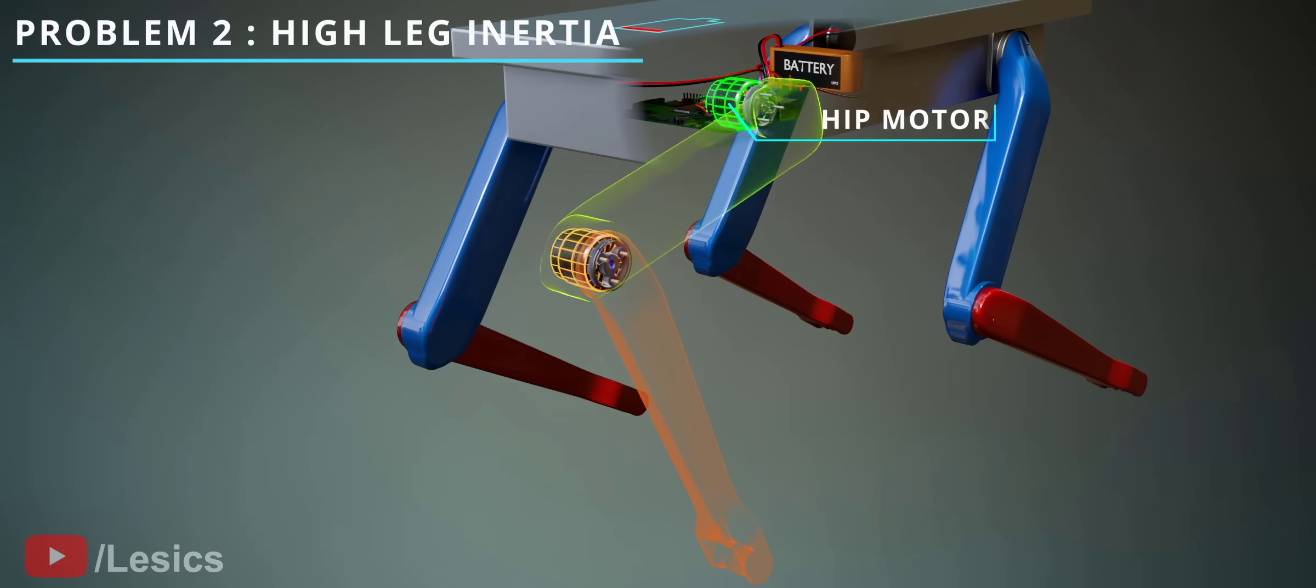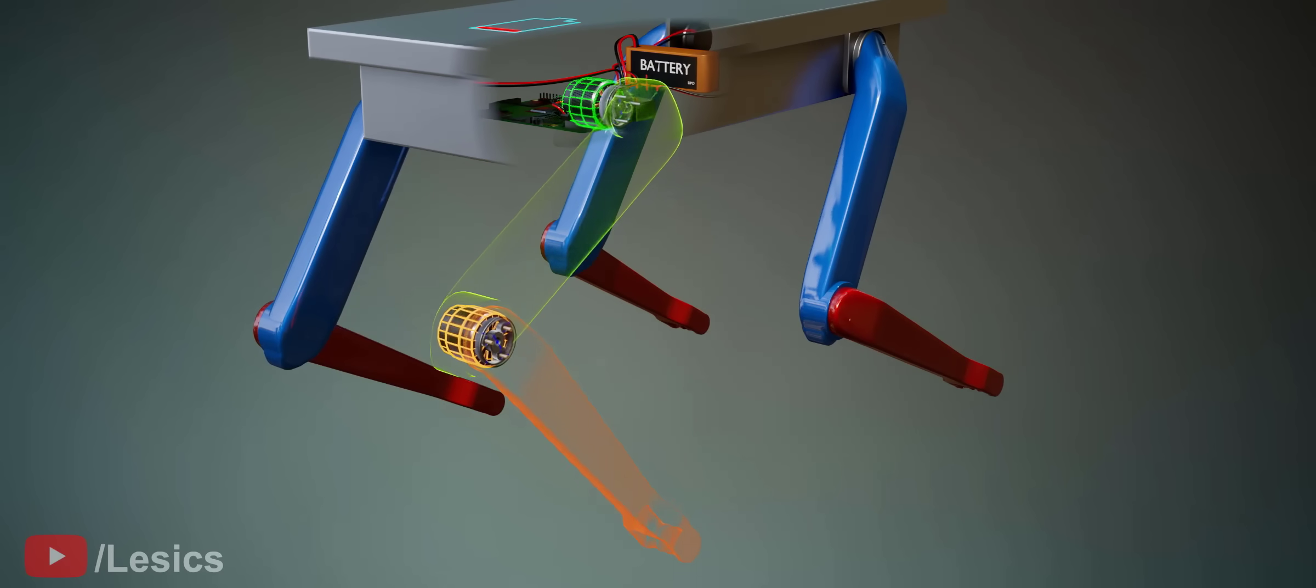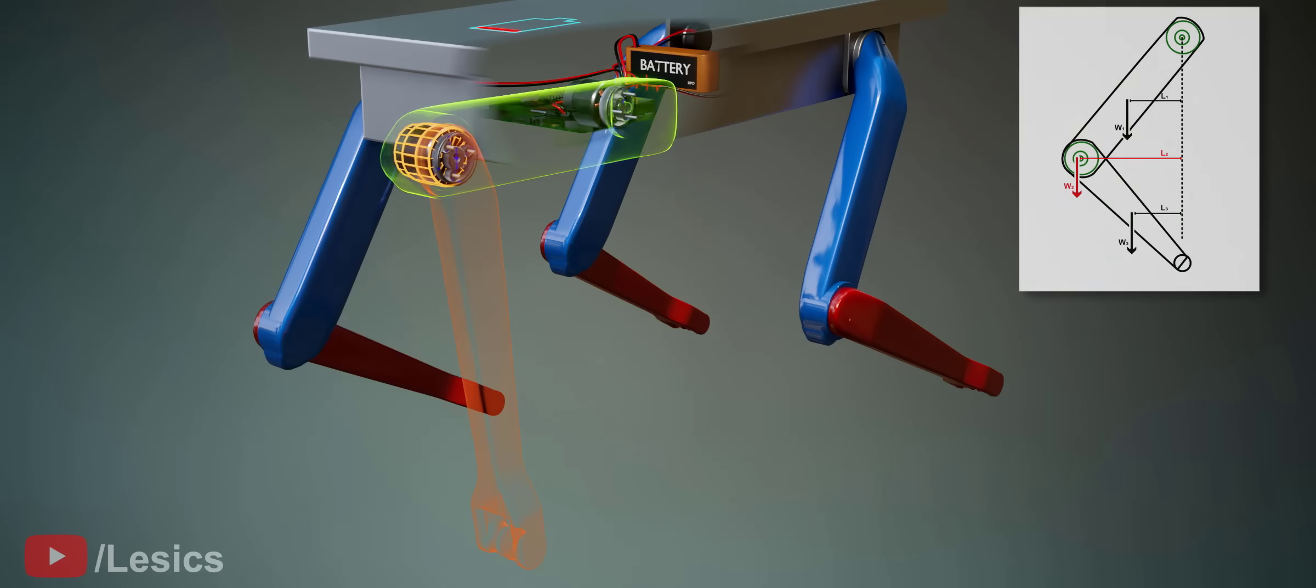When the hip motor rotates, it has to lift the weight of the upper limb, lower limb, and knee motor also. During the leg lifting operation, the various torques which are acting on the motor are shown here.